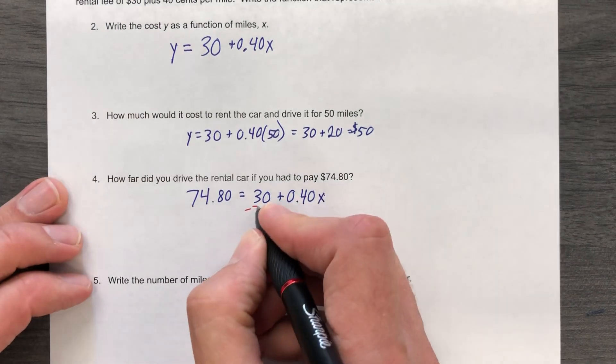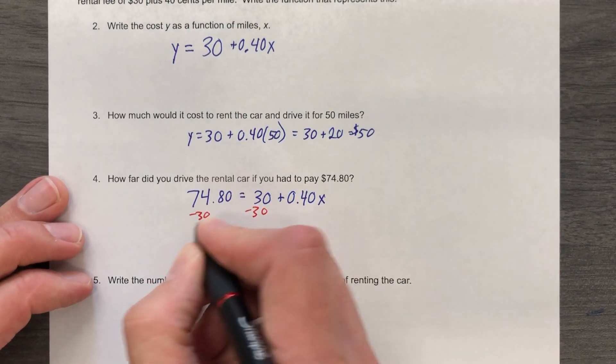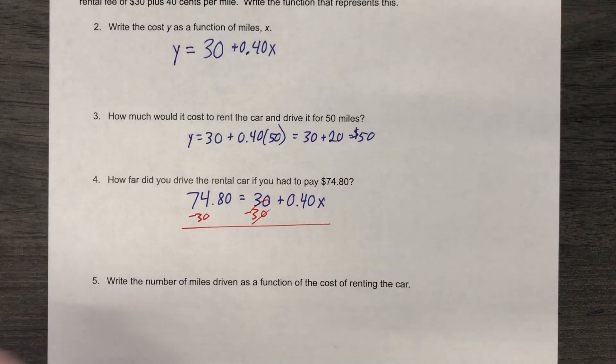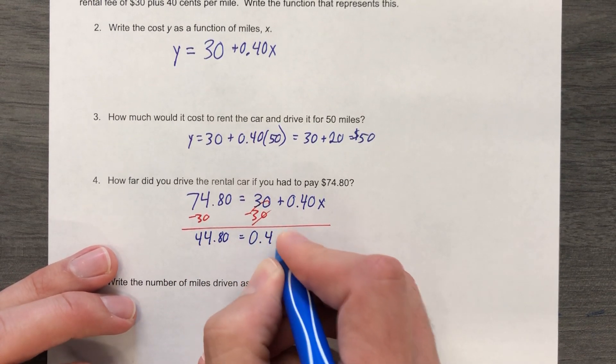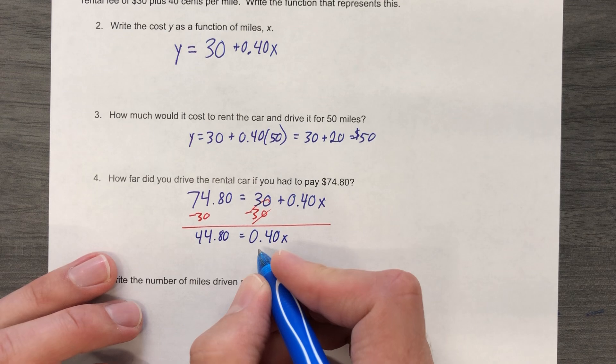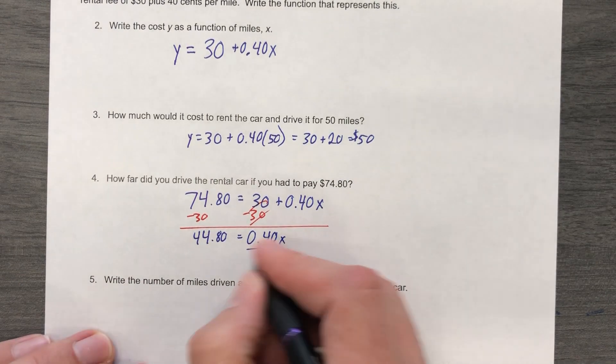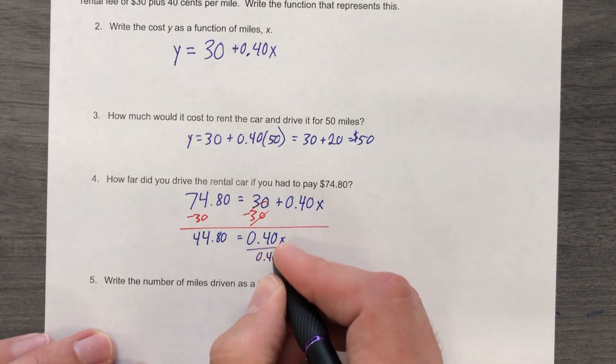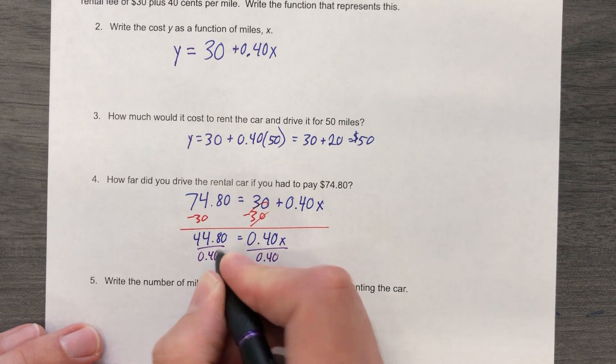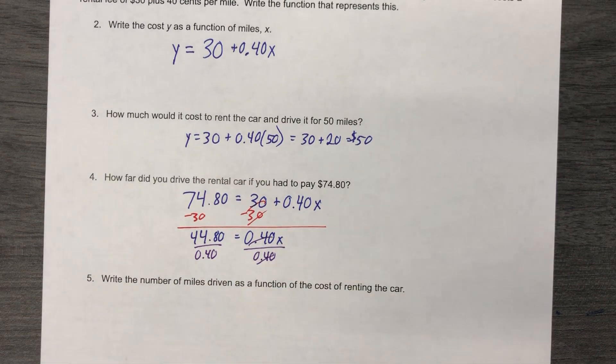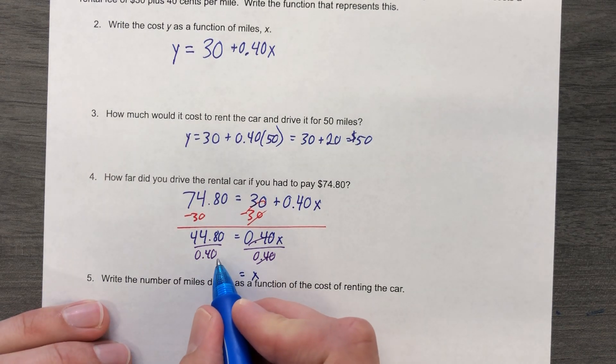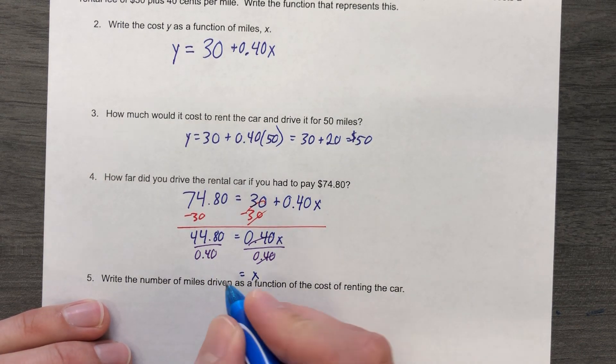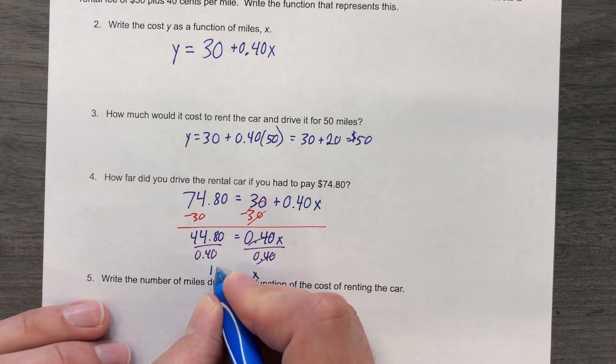So let's subtract 30 from both sides. Cancel, cancel. And that's going to give me $44.80 equals 0.40X. And then we will switch colors again for fun. 0.40, 0.40, cancel those. And we will divide $44.80 by $0.40. And that's going to give me $112.